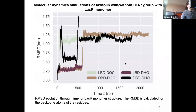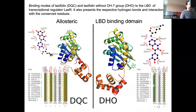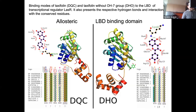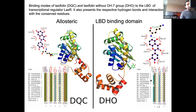The first binding site is the LBD binding domain. The taxifolin molecule does not interact directly within the binding domain — it acts via an allosteric mechanism — but it does interact with some important residues that are conserved across different species. Changing or removing the OH group does affect the binding, and the molecule interacts with fewer acidic residues in that case.